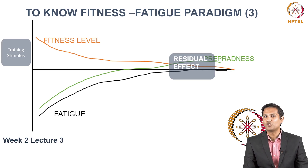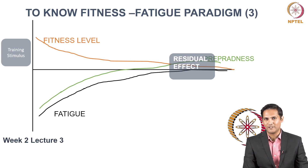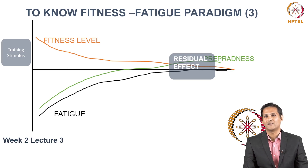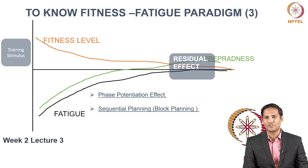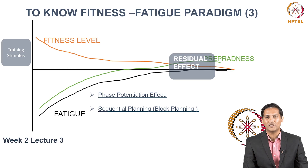This performance window is very short-lived, so whatever increase in physical fitness, preparedness, or game strategies has been achieved through training must be used during the competition phase or events. Unfortunately, this increase in performance is very short-lasting. The ultimate goal is to increase this residual effect, also called the phase potentiation effect. One way to delay the decline of the residual effect is by designing sequential planning, also called block planning, which is where sports prioritization will be introduced in the next lecture.